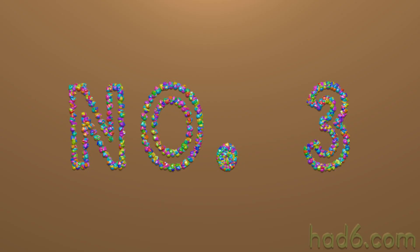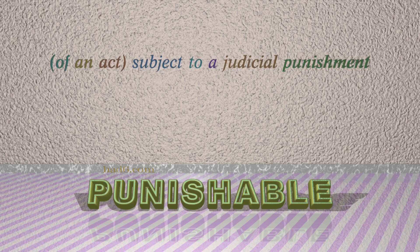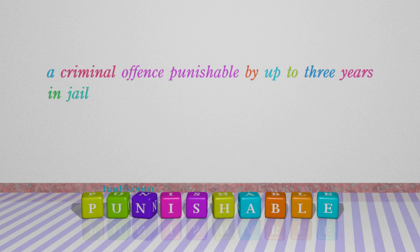Number 3: Punishable — which means of an act subject to a judicial punishment. For example: A criminal offence punishable by up to 3 years in jail.